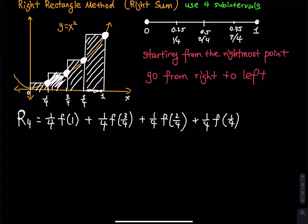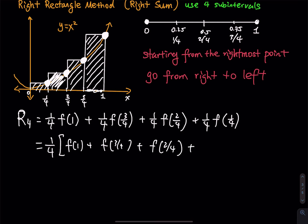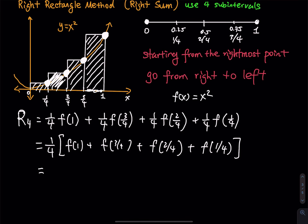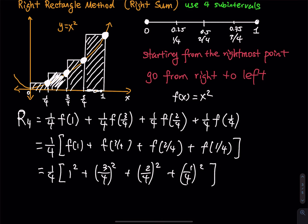Another way to write this is to factor out the 1 over 4, and then compute f of 1 plus f of 3 over 4 plus f of 2 over 4 plus f of 1 over 4. Since f of x equals x squared, plugging in gives: 1 over 4 times the quantity 1 squared plus (3 over 4) squared plus (2 over 4) squared plus (1 over 4) squared. Remember you have to square the entire fraction, not just the numerator.